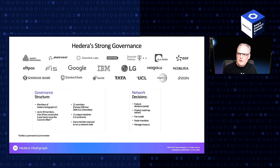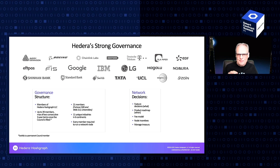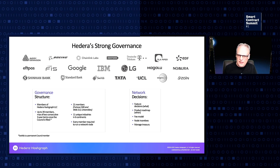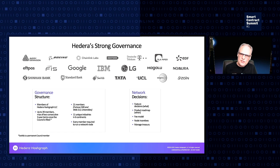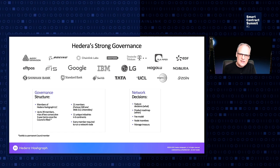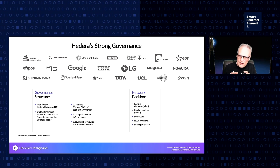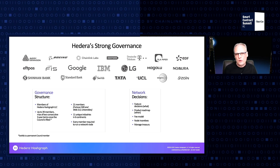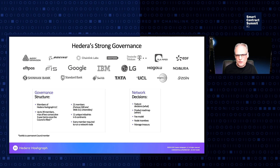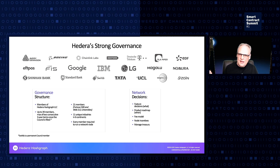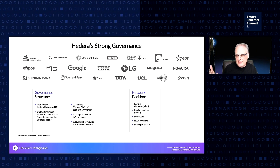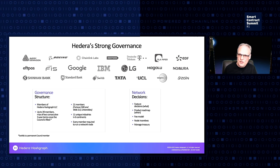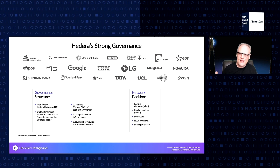The council members were intentionally chosen to span geographies — there's no concentration on a given continent. They're chosen to span industries; it's not a bunch of banks or tech giants. There is good representation across industries, and that representation will increase as the council grows. Council members can't stay forever — they can serve up to two three-year terms for a maximum of six years before they have to rotate off.